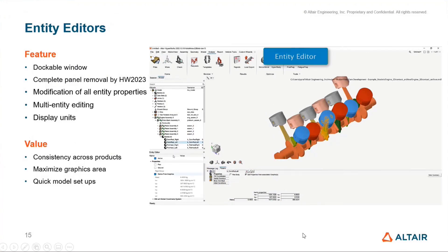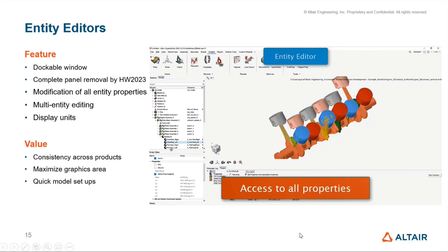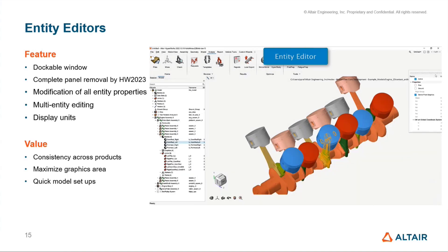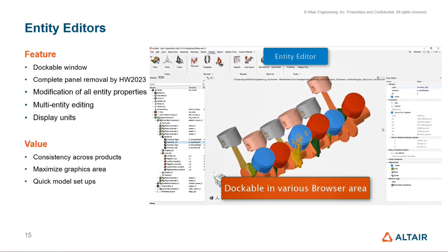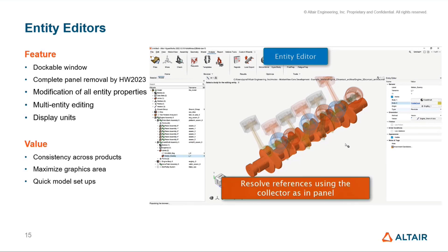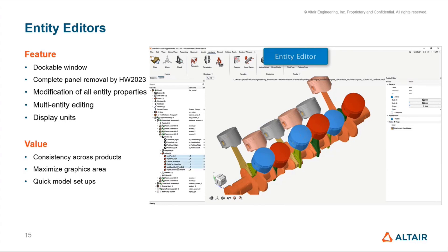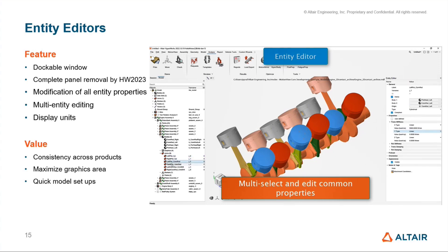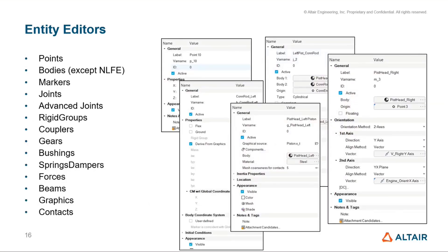The next content is the entity editors. In 2022, we had a few entity editors; now more entities have editors — a browser-style property sheet that is a natural UI for editing properties in the new interface. These entity editors replace panels, and panels will be removed by version 2023. The editors contain all properties for an entity, allow multi-editing of common properties across multiple entities, and display units where appropriate. Most commonly used entities now have editors, and remaining entities will get editors in upcoming releases.